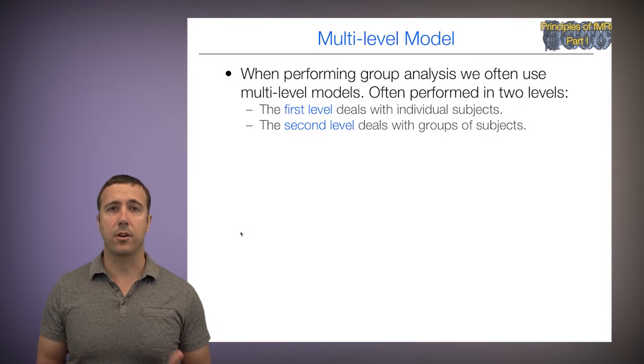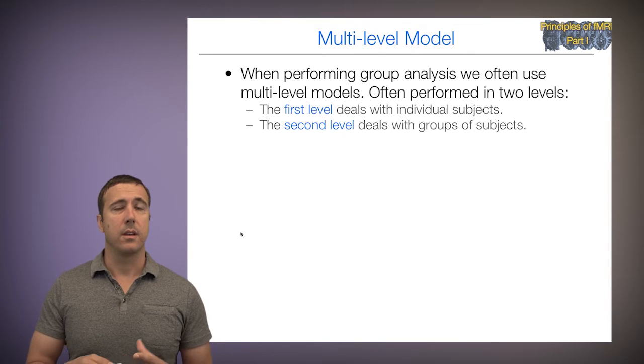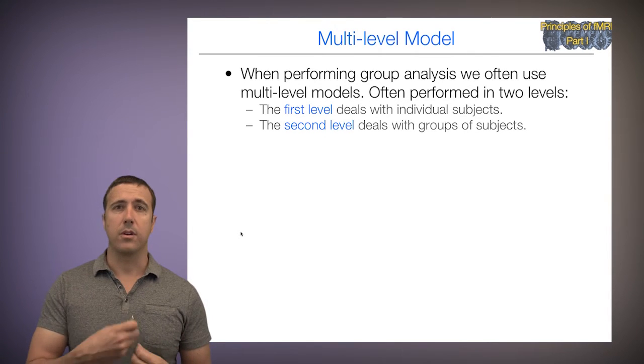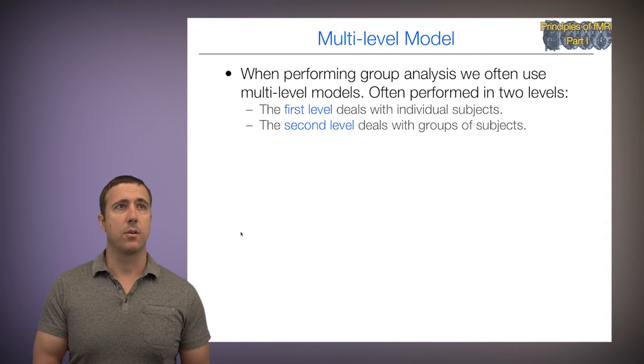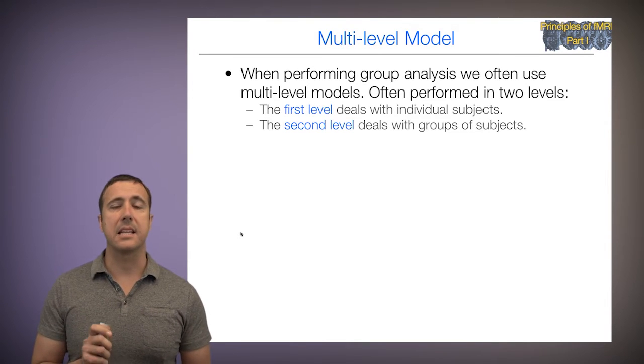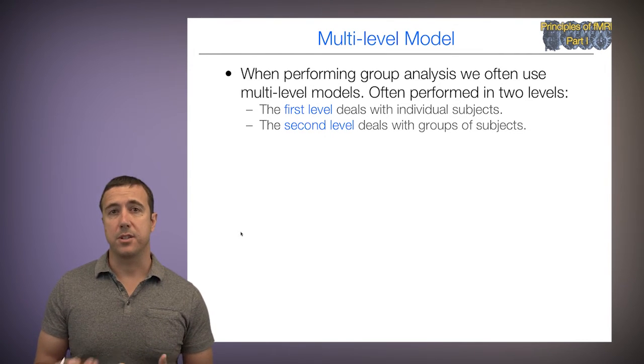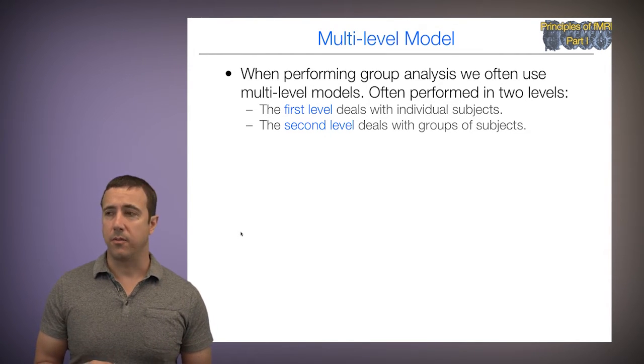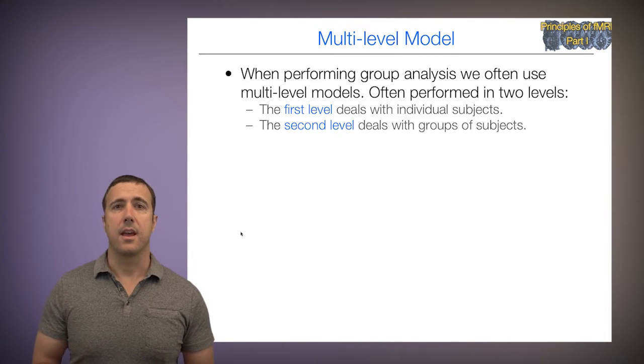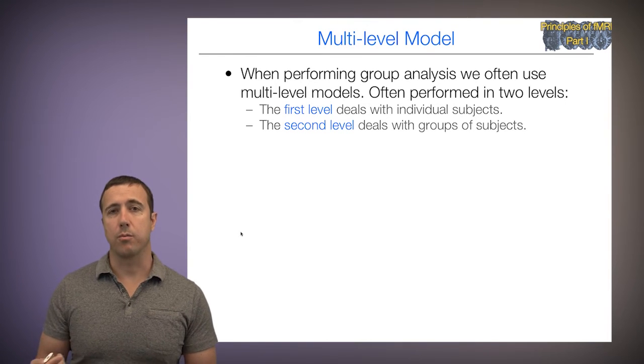So the data has this hierarchical structure, and in a multi-level model, we do a first-level analysis which deals with individual subjects. We run a model on each subject. Then a second-level model deals with groups of subjects, and that could involve patients versus controls, or individual differences and relationships between brain activity and person-level characteristics like age or performance.